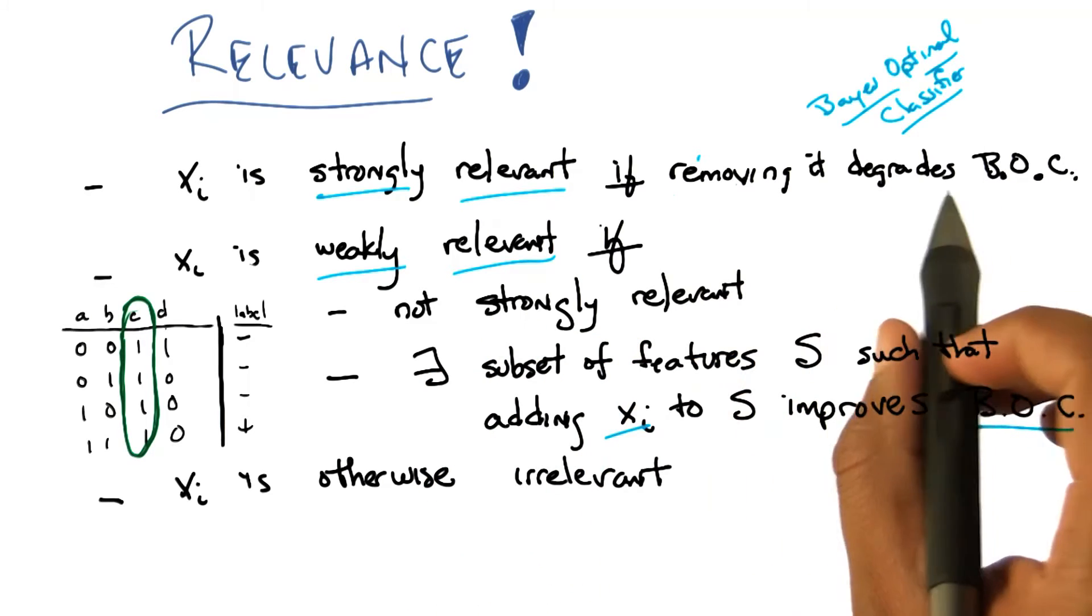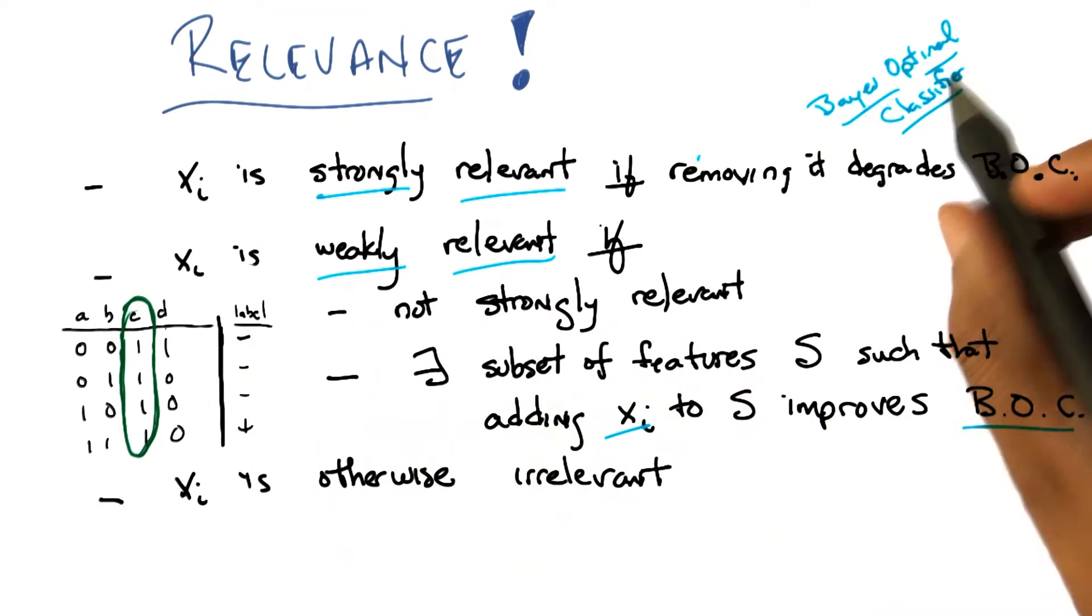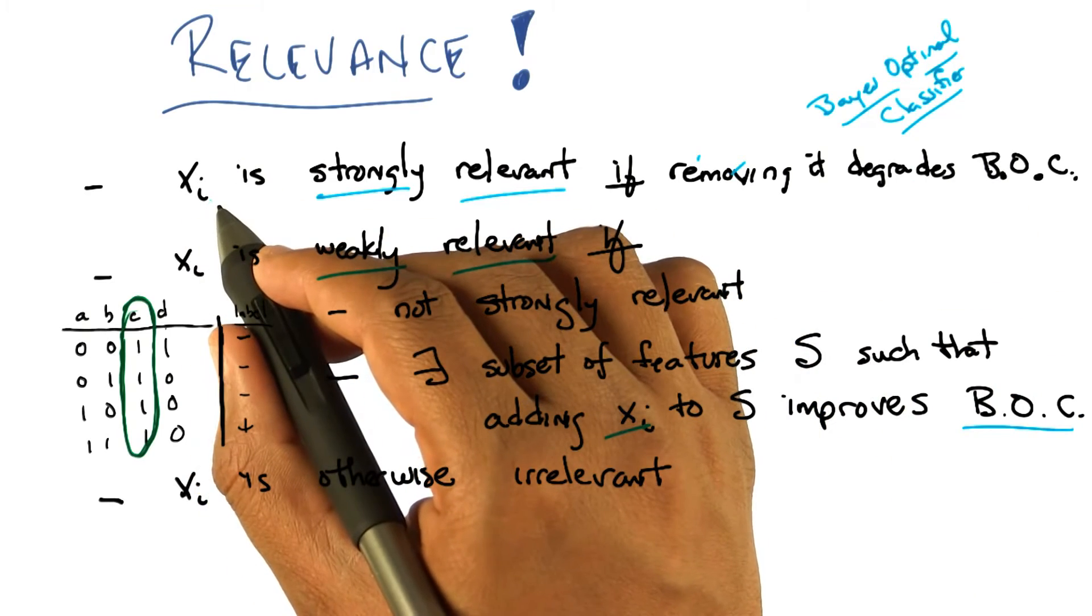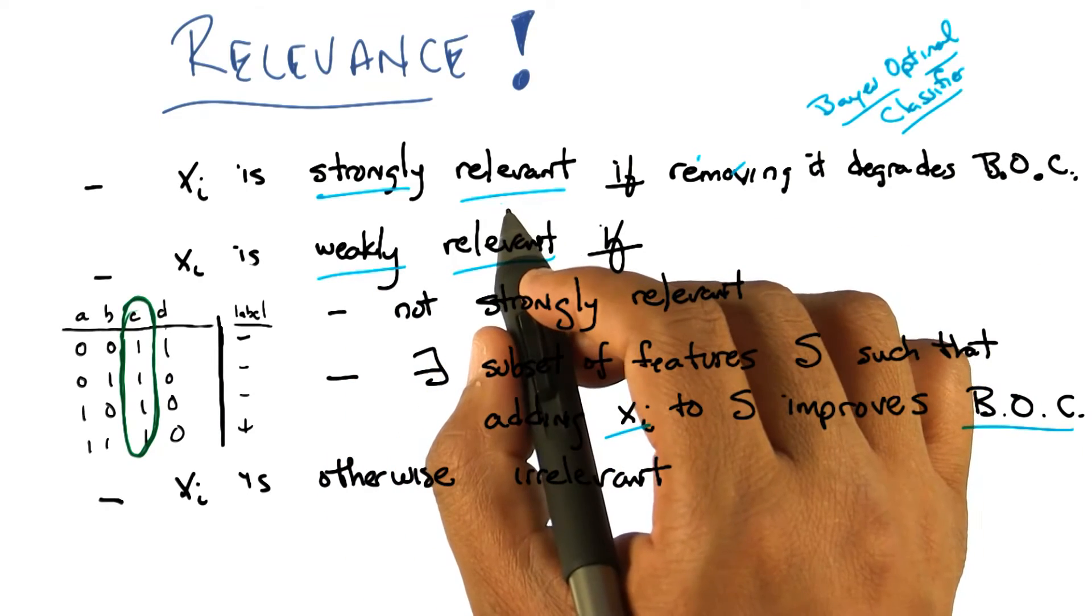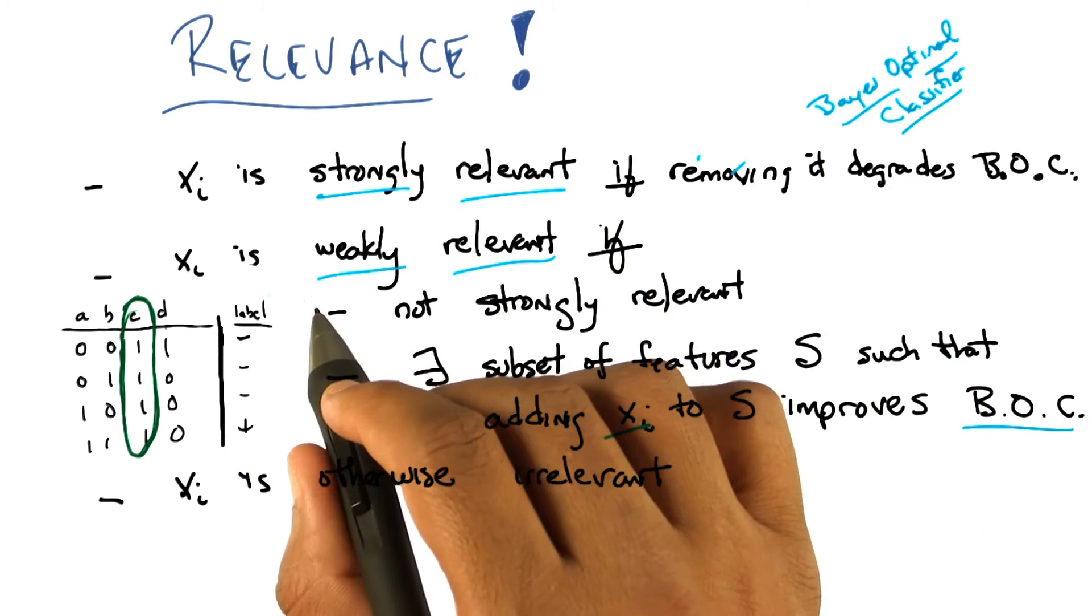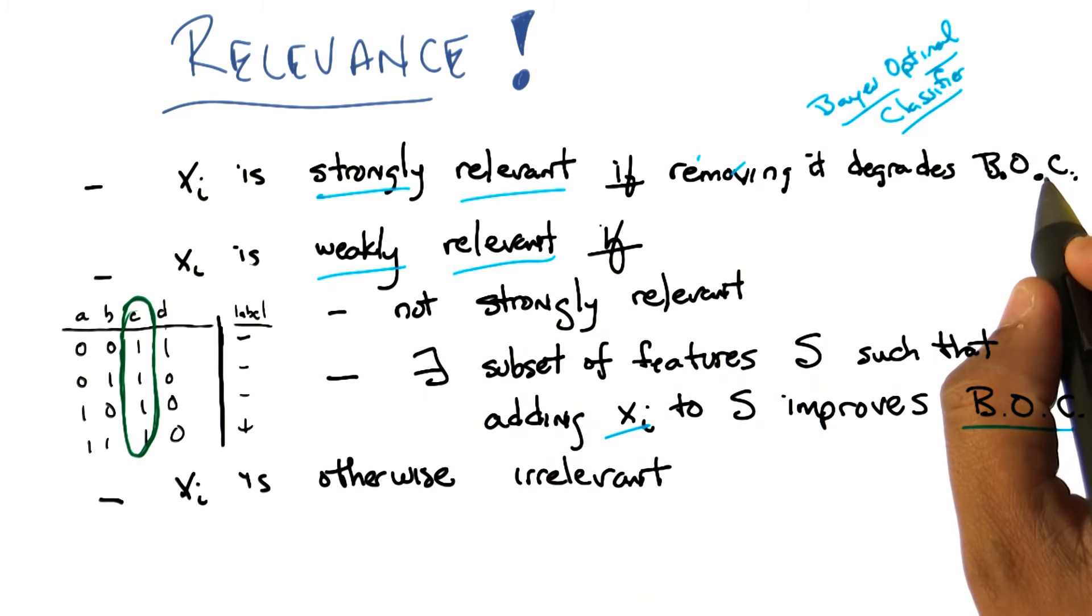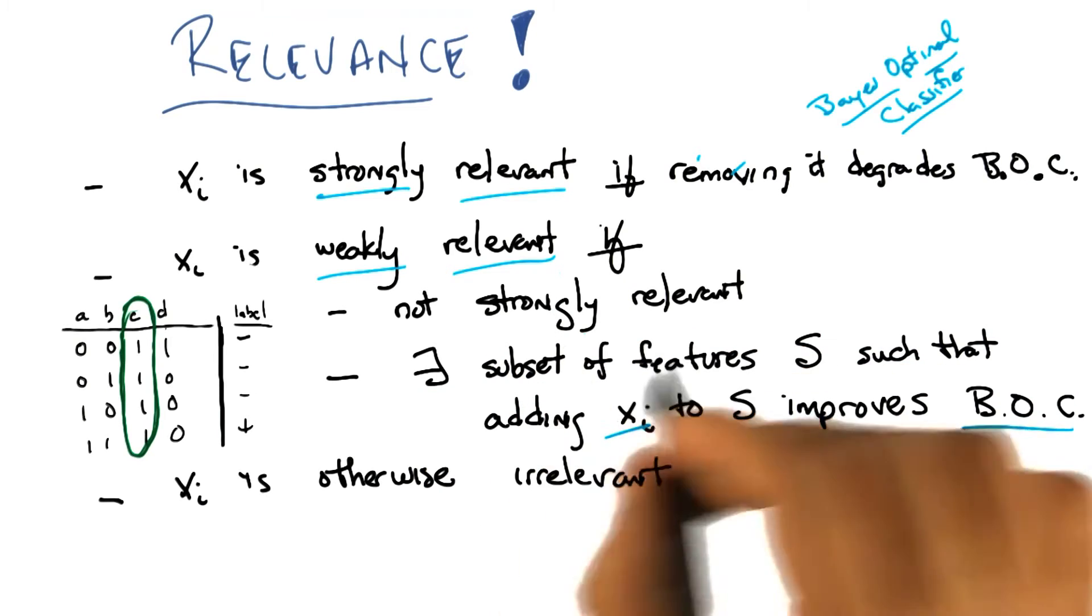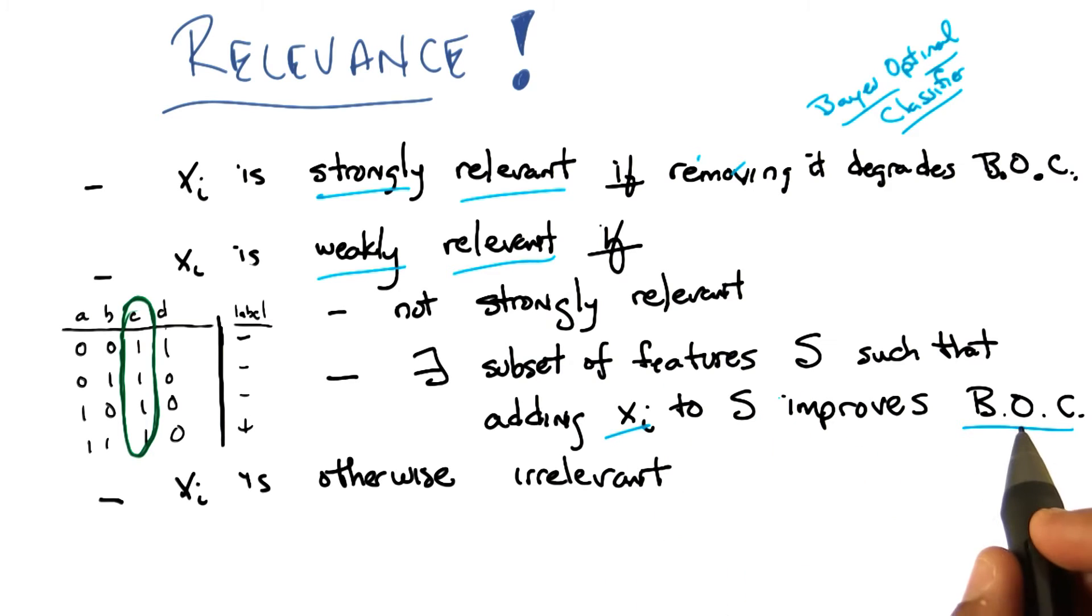Right, or just on any subset of features. So in particular, in the strongly relevant case, that's the case. We're saying, well, what would the Bayes optimal classifier be on all of the features versus the Bayes optimal classifier on all of the features except x sub i. And if removing x sub i degrades the performance, then we say it's strongly relevant. On the other hand, if x sub i is not strongly relevant, that is removing it doesn't actually hurt the Bayes optimal classifier, it can still be weakly relevant in the case where there is some subset of the features, such that if I added x sub i to that subset, it would improve the Bayes optimal classifier on just that subset.